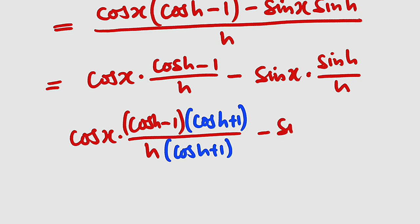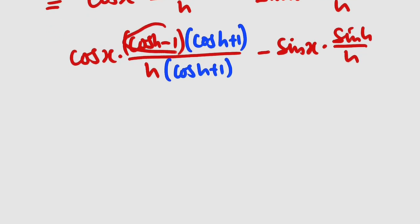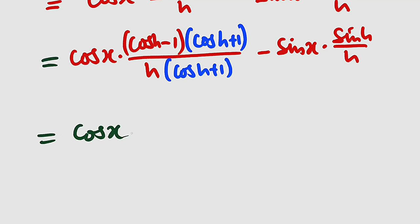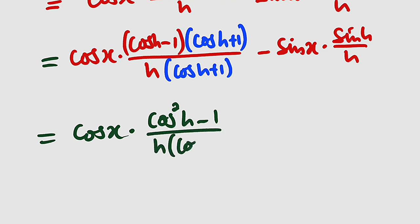So we have cosine x multiplied by (cosine h minus 1)(cosine h plus 1) divided by h times (cosine h plus 1), then minus sine x multiplied by sine h divided by h. The numerator (cosine h minus 1)(cosine h plus 1) is a difference of two squares, which gives us cosine squared h minus 1. So our expression becomes cosine x multiplied by (cosine squared h minus 1) divided by h times (cosine h plus 1), minus sine x times sine h divided by h.